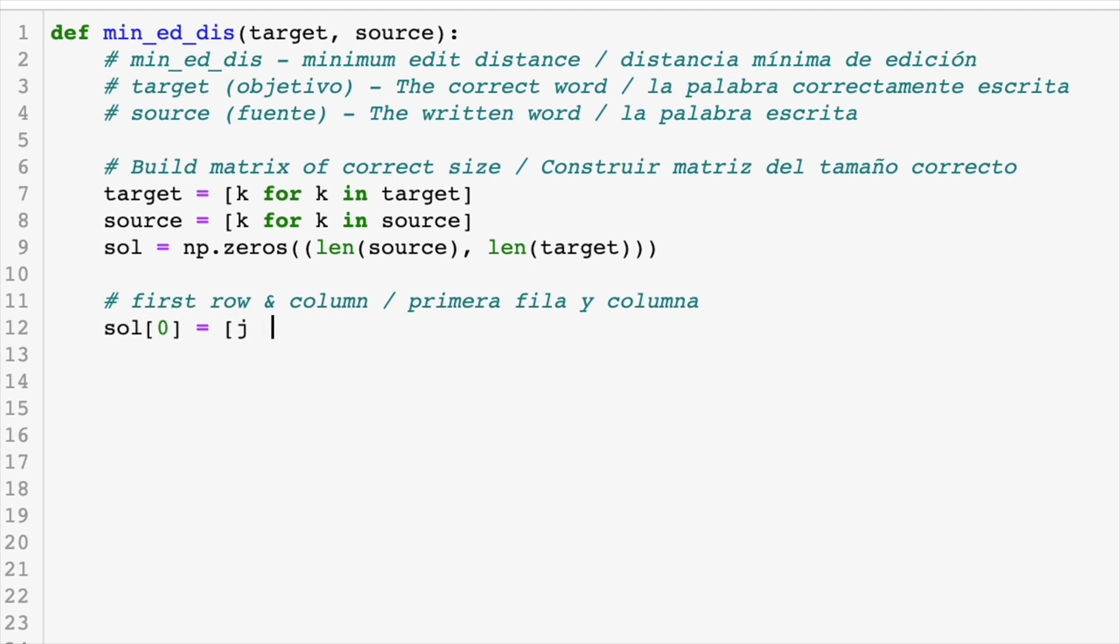So sol at row zero is equal to j for each j in range zero to the length of target. And sol of colon comma zero or the first column is j for each j in the range zero to the length of the source. Excellent.